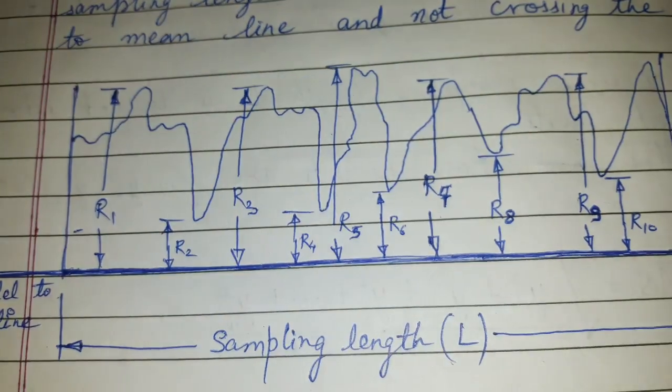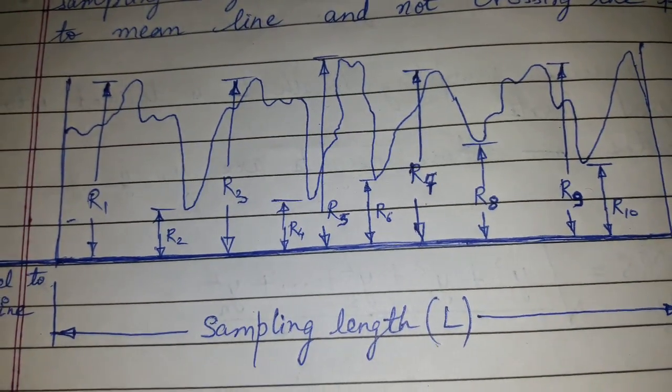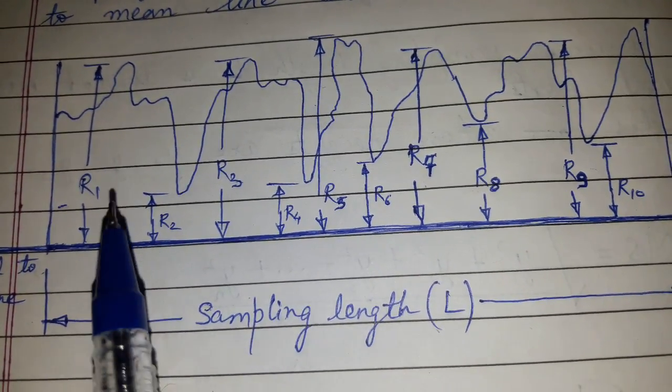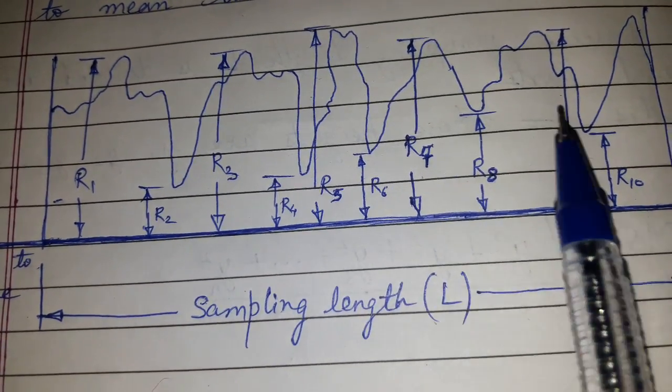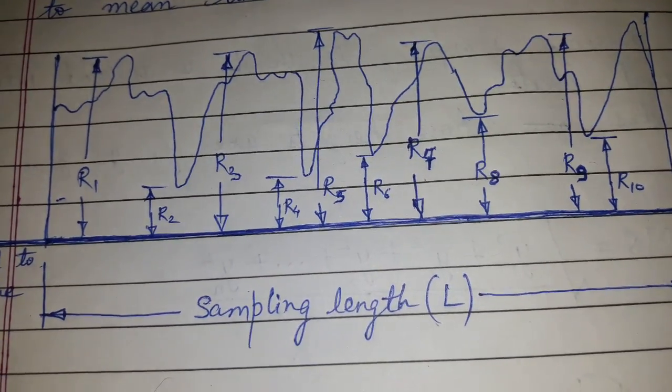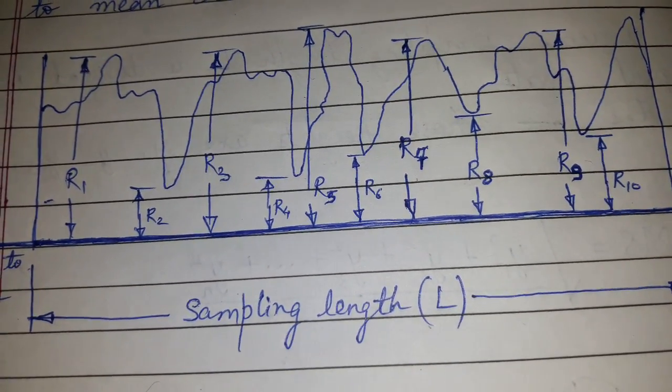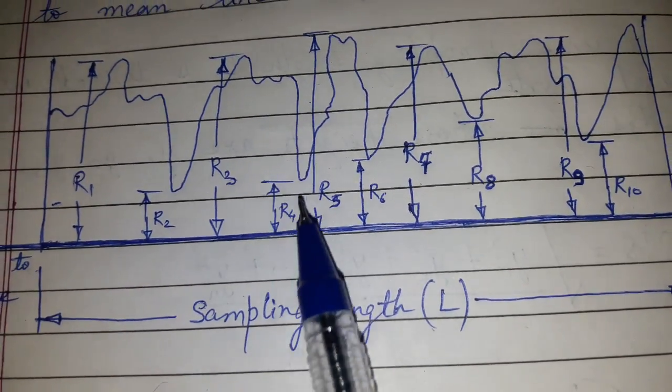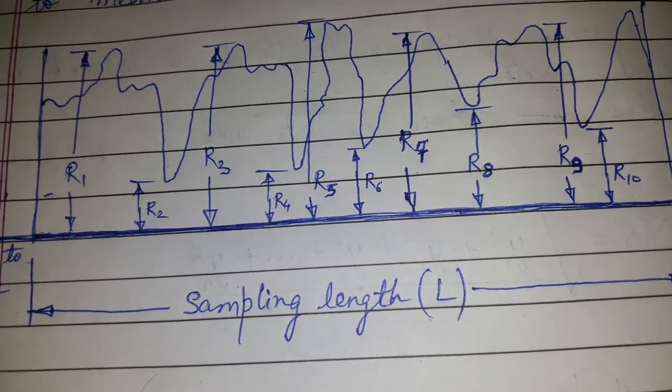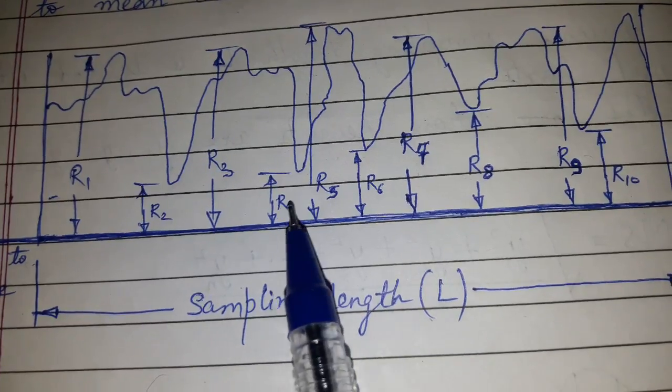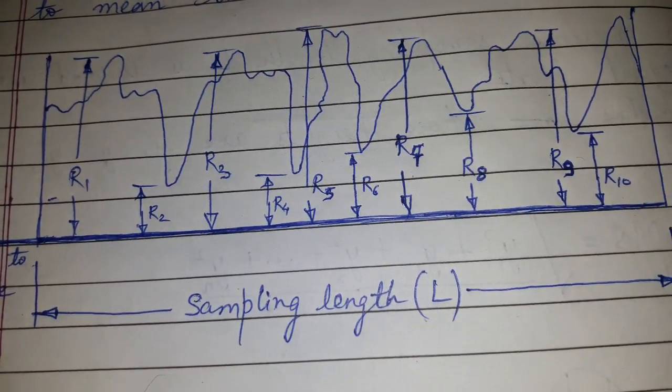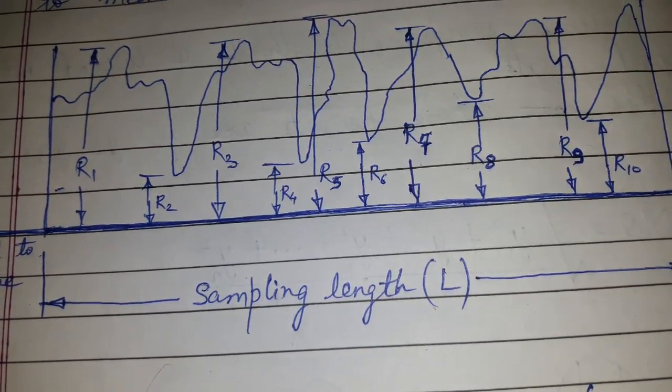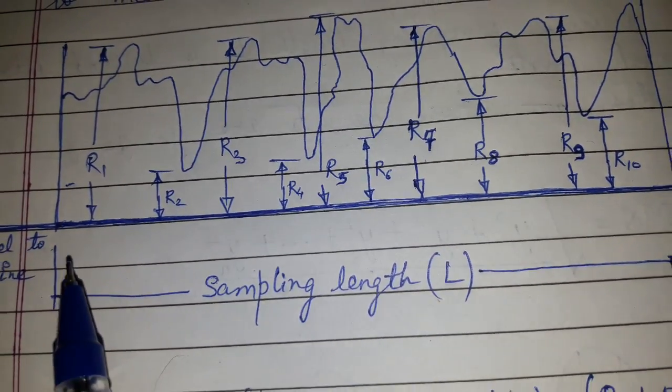Hi friends, today's topic is RZ value or 10-point height irregularity. It is defined as the average difference between the five highest peaks and the five lowest valleys within the sampling length, which is measured on the